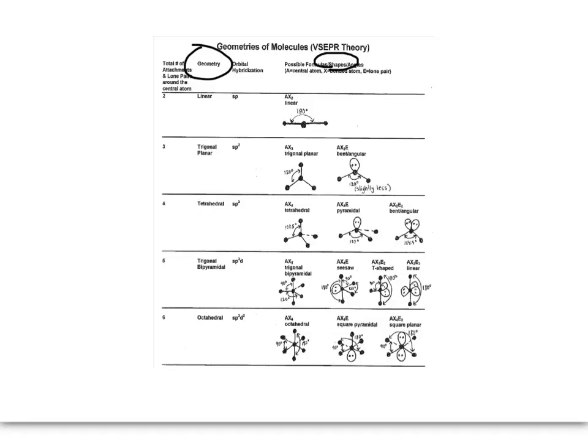What is different about them are the number of attachments and lone pairs. These little bubbles right here, with the dots, represent lone pairs of electrons. To determine which row to look at, we're going to look at the total number of attachments and lone pairs around the central atom.